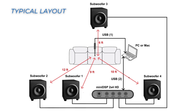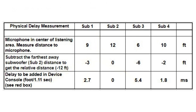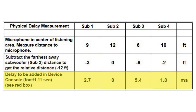Let's walk through a typical workflow for physical delay measurement. First, measure the distance of each subwoofer from the central listening area. Next, calculate the difference in distance of each subwoofer from the farthest subwoofer in feet. Now you can find the delay in milliseconds by dividing the distance in feet by 1.11, which is the rate at which sound travels in feet per millisecond.